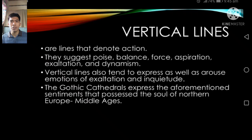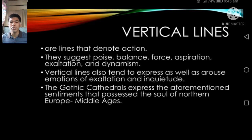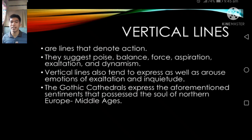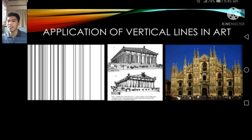Vertical lines are lines that denote action. They suggest poise, balance, force, aspiration, exaltation, and dynamism. Vertical lines also tend to express and arouse emotions of exaltation and inquietude. Gothic cathedrals express these sentiments that possessed the soul of northern Europe in the Middle Ages — cathedrals are a prime example of vertical lines.